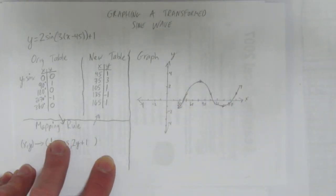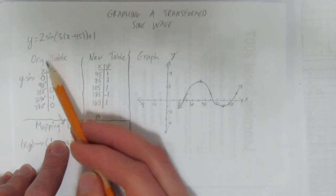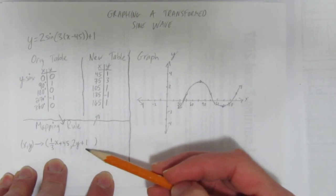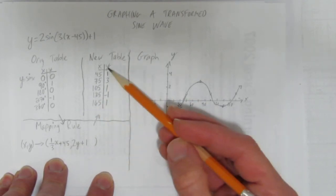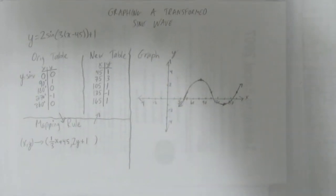And we've done it. We've graphed a transformed sine wave. We took our equation. Knew that the parent function was sine x. So, we made an original sine table. Then, looking at our equation, we made a mapping rule. And used that mapping rule recipe to create a new table. That new table is what we graphed.